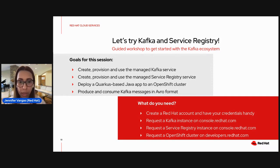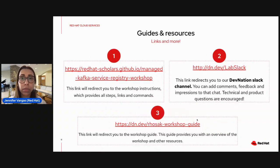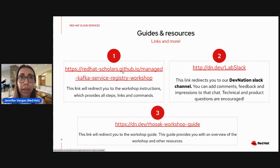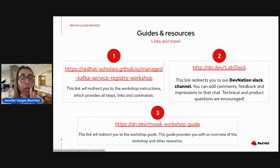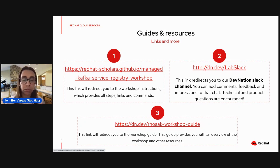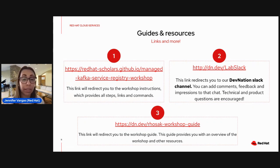The links that you need today are organized by priority and copied on the chat. The first one is the Red Hat Scholars GitHub.io link — please click on that one. That will have all the step-by-step instructions you need to complete this workshop. Bernard will walk you through many of the steps, but have it handy in case you lose your pace or want to go faster or do it later.